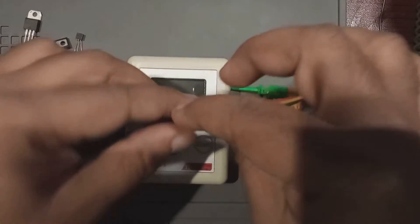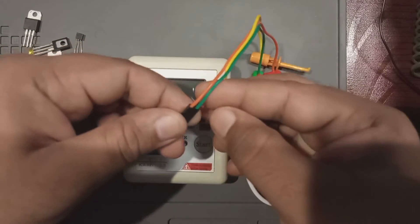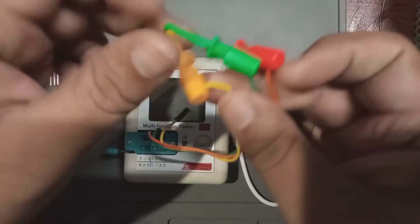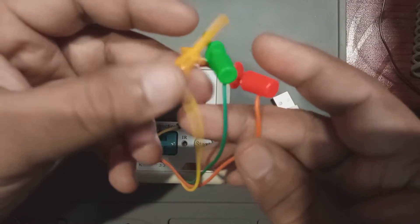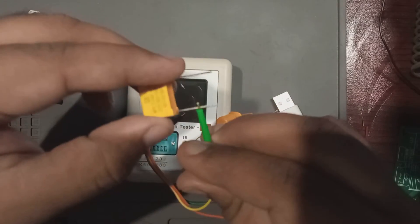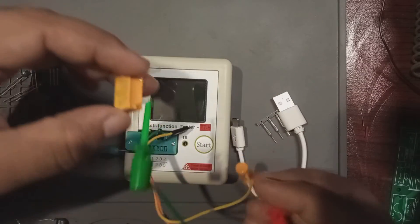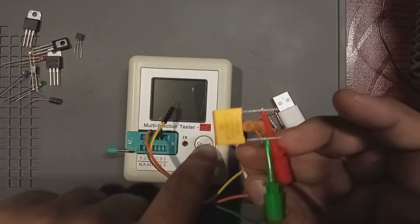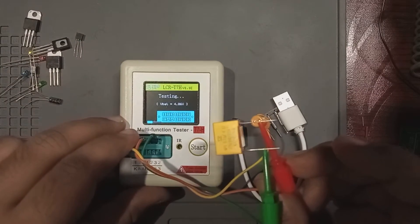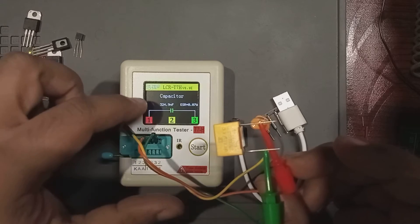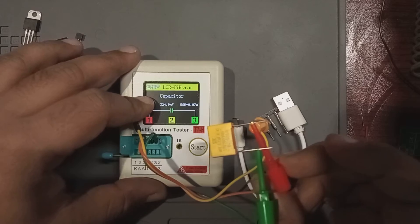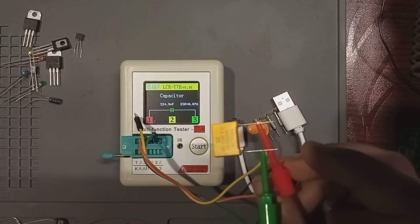I'm going to use the orange and the green one. First, let's hook up the jumper pins. And then let's connect the orange and the green plunger to the capacitor carefully. Now if you press the start button, it detects the capacitor as a 324 nanofarad capacitor with an ESR of 0.07 ohms, which is not bad, is it?